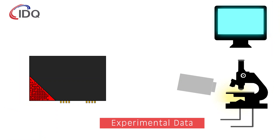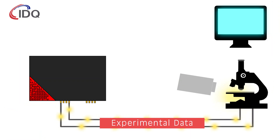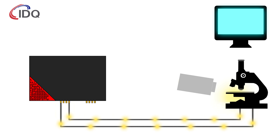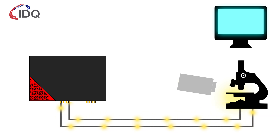An experimental setup creates data — for example TTL or NIM pulses — from single photon detectors or any other device generating a timed pulse. In order to time-correlate the data from different channels, the arrival time of the pulses is precisely timestamped inside the device.